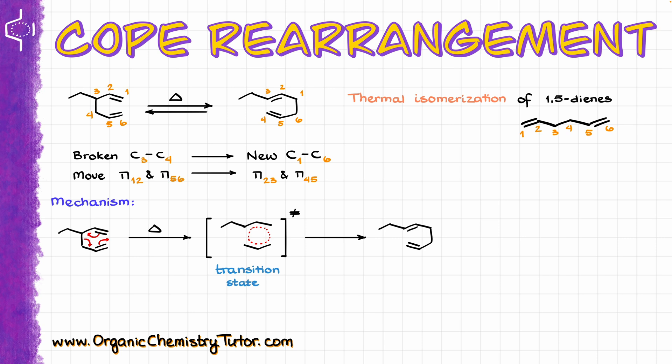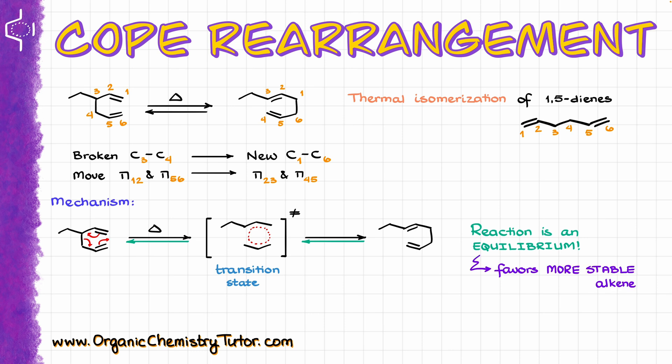The important thing about this reaction is that it is a thermal equilibrium, which means that we are going to end up with some amount of our starting material and some amount of our final product, and they are going to be at equilibrium with each other. Since this is an equilibrium, the reaction typically favors the formation of the more stable alkene. We often see ratios of 1 to 5 or 1 to 6, give or take, between starting material and final product, provided that the final product is more stable.